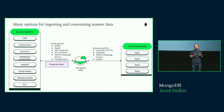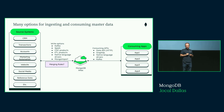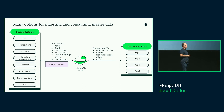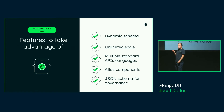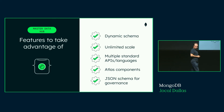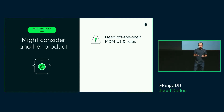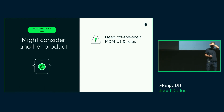There's a whole master data management category of tools that handle merging rules for you — good to be aware of. Some support MongoDB, some don't. We offer a public JSON schema spec that we enforce, so in MongoDB you can govern zero fields, all of your fields, or anything in between — increasingly useful for governing shared data. You might consider another product if you really need off-the-shelf rules from a tool that doesn't support MongoDB.